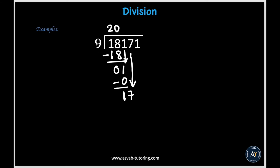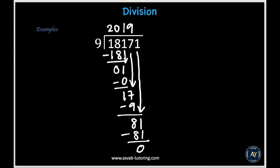We know that 1 times 9 is 9, and 9 is the closest we can get to 17 without exceeding it — because 2 times 9 is 18, which is greater than 17. So when we subtract, we get 8. Since 8 is less than 9, we bring down the last digit, which is 1, to get 81. We know 81 is divisible by 9 because 9 times 9 is 81. We put down 81 and subtract to get 0. Our remainder is 0 and we've used all the digits, so our quotient turns out to be 2,019.